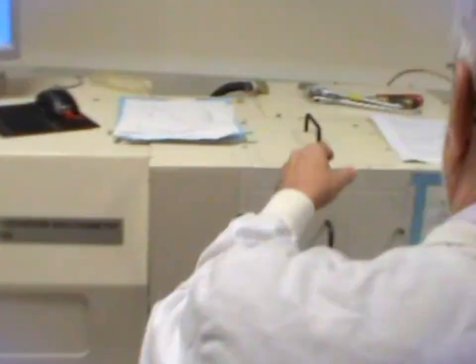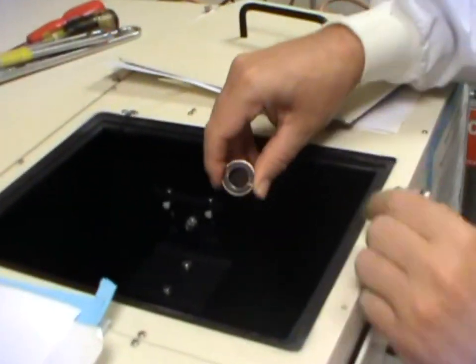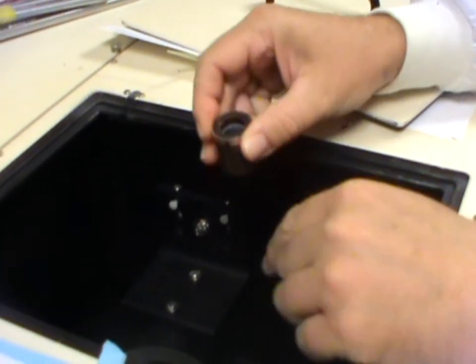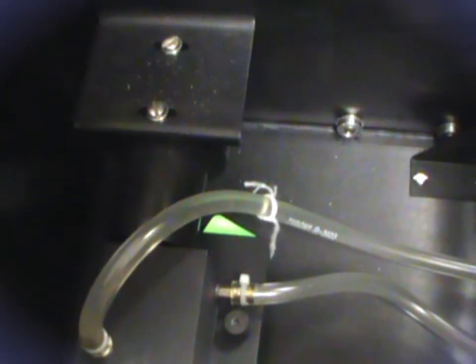Okay, this is ready to load into the sample chamber. Make sure that the cell is adjacent to the detector so that we can capture as much scattered light as possible.